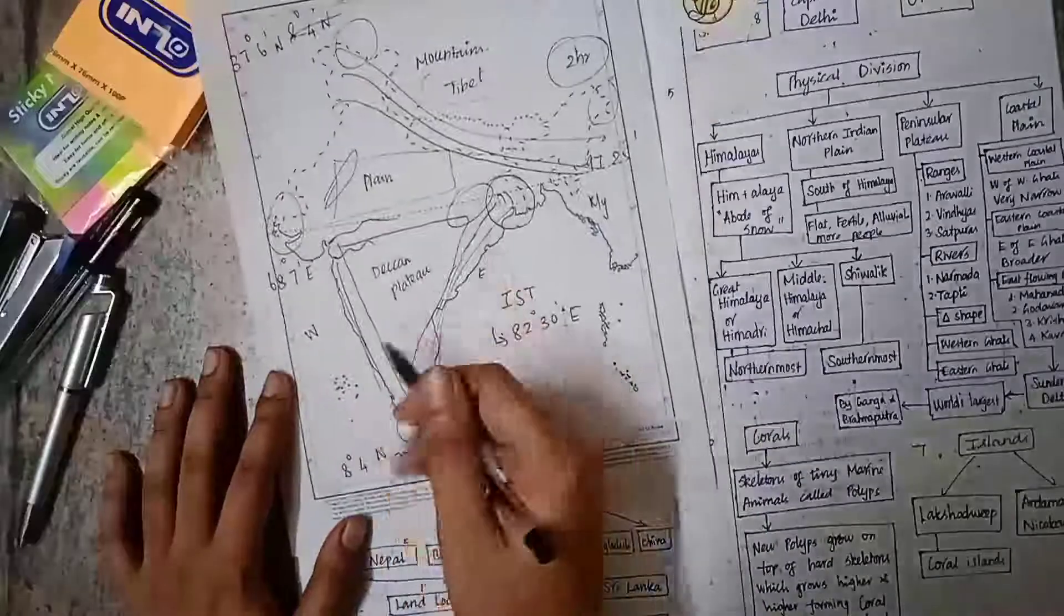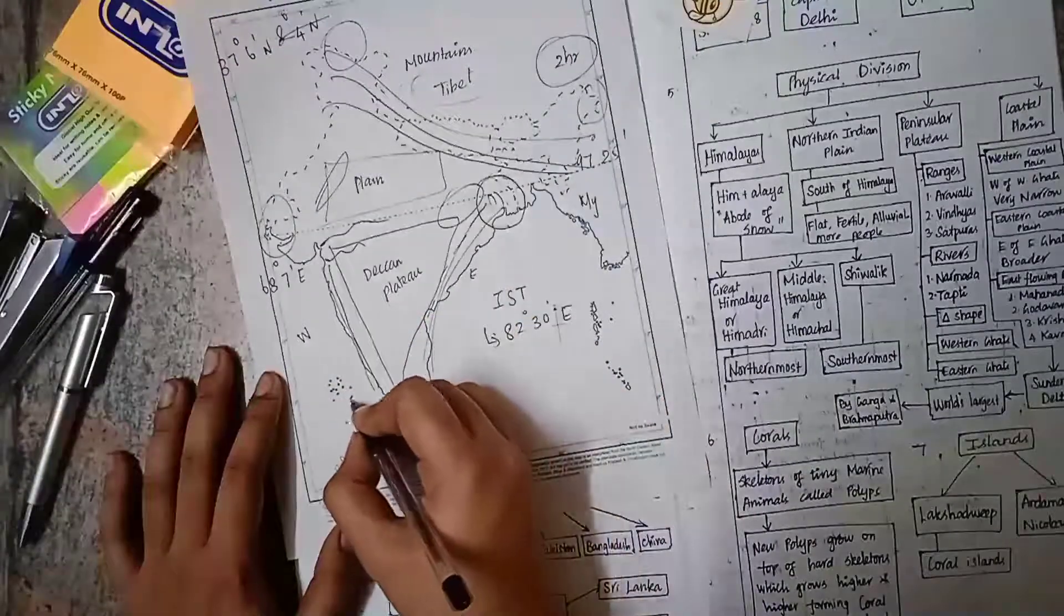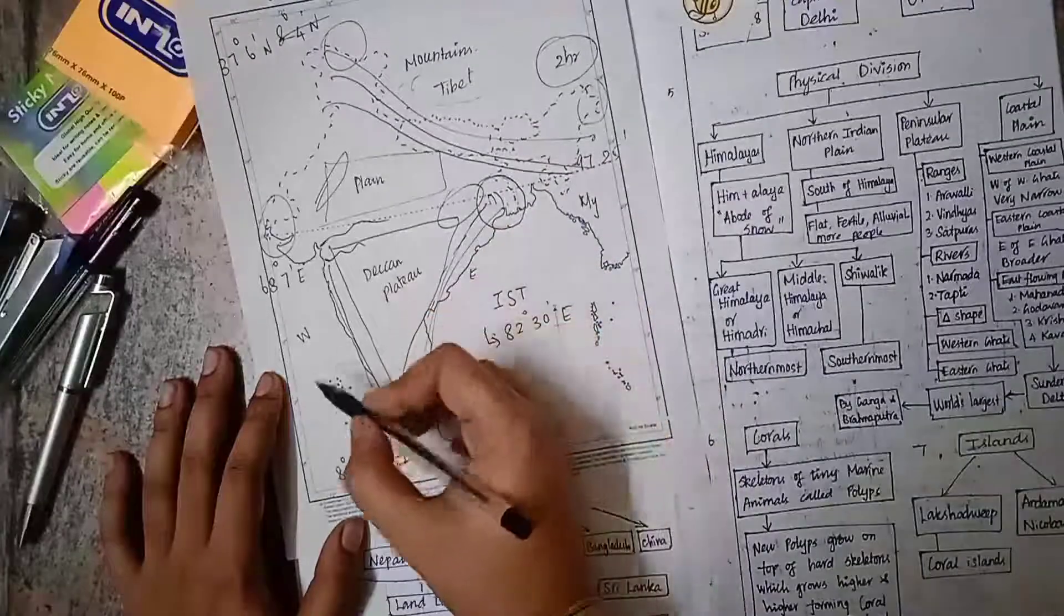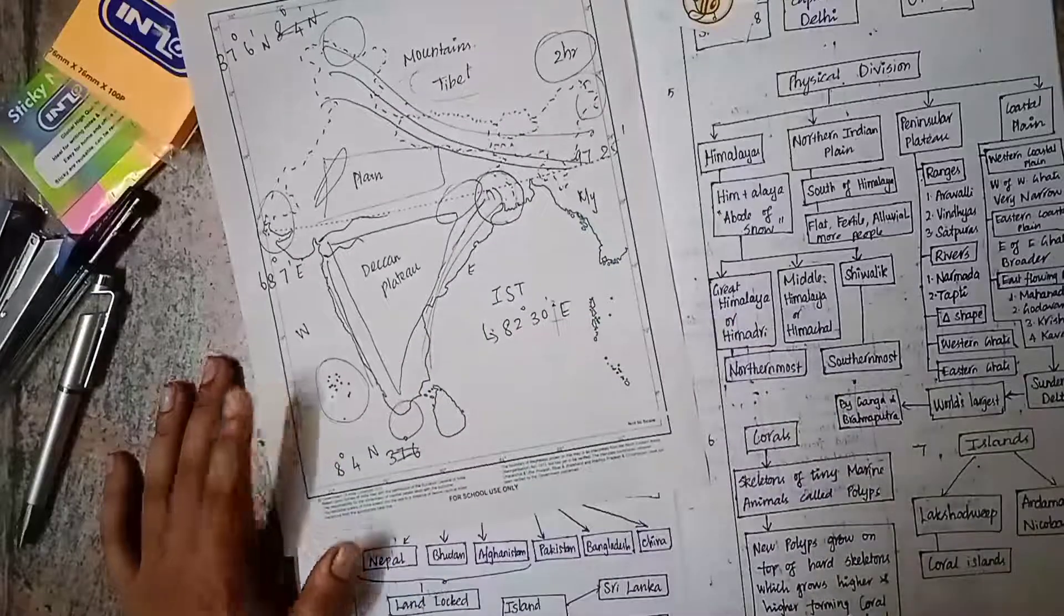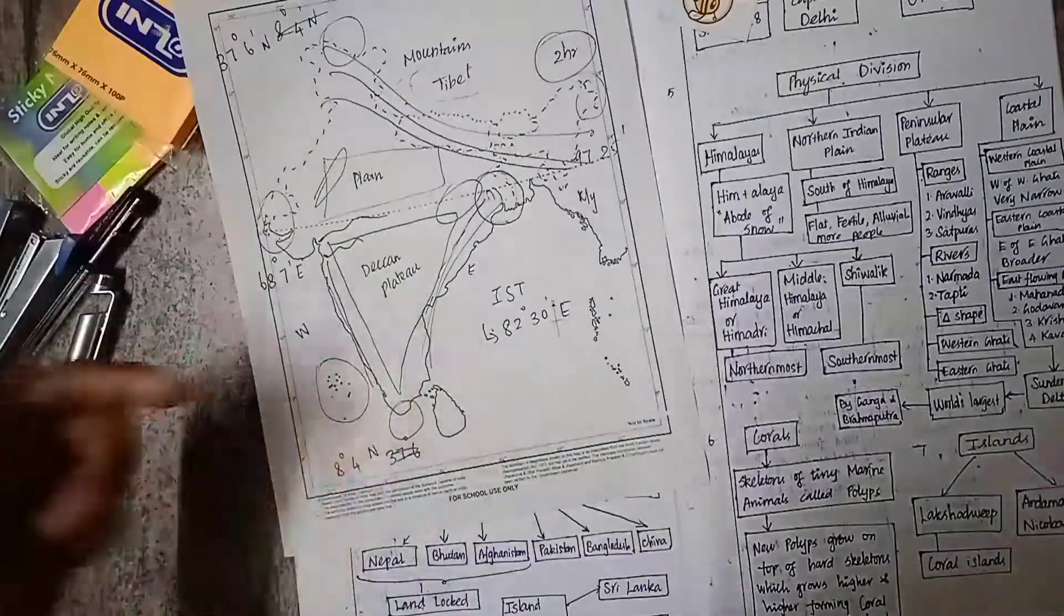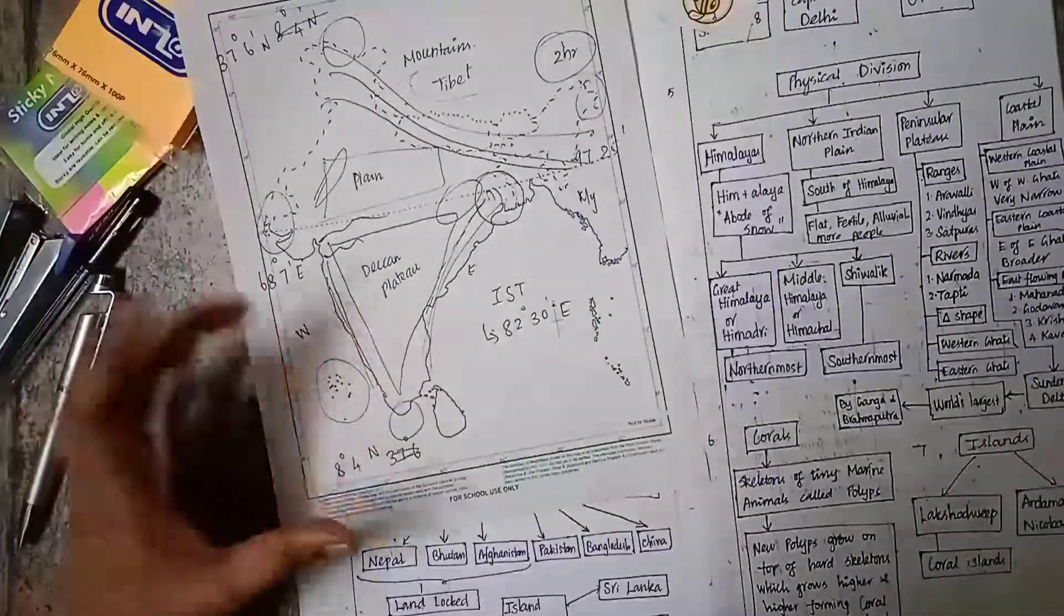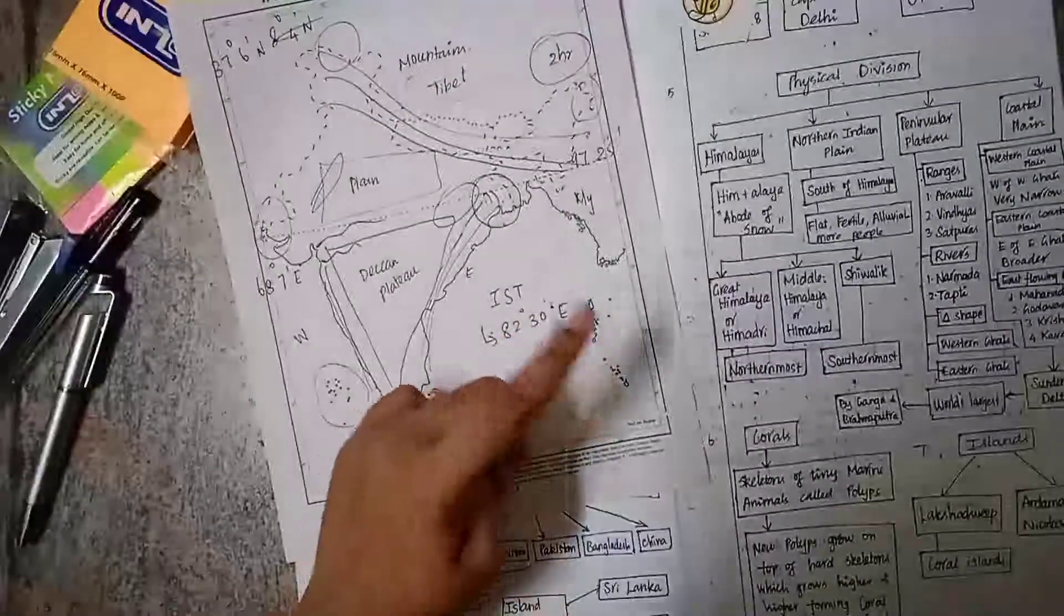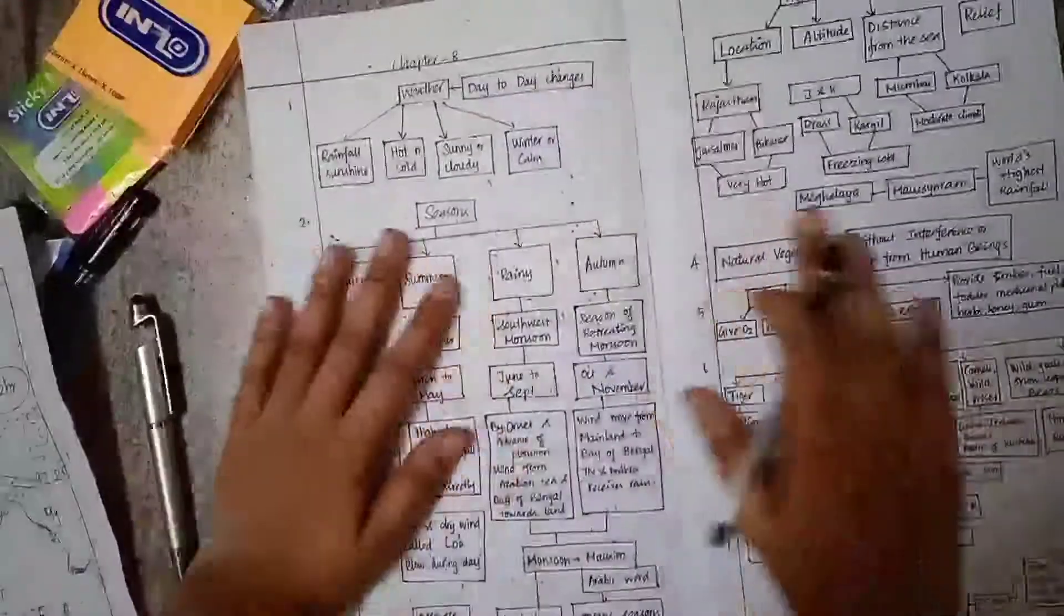We have corals, which are the skeletons of tiny marine animals called polyps. The new polyps grow on top of old skeletons, growing higher and forming coral islands. Lakshadweep is a coral island. We have two islands in India: Lakshadweep island and Andaman and Nicobar islands. Now we can see Chapter 8, the last chapter.